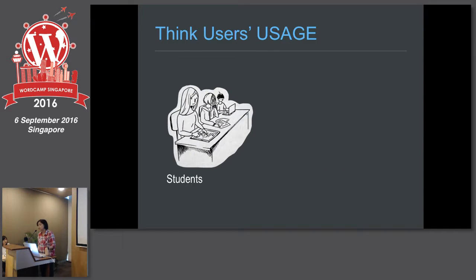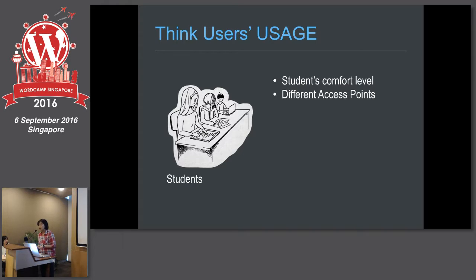We also have to think about student usage. What is the student's comfort level? Different students vary — some are more tech-savvy, some are not comfortable. There are also different access points: some students use laptops, some use mobile phones, some use tablets. How are they accessing the blogs? Different devices, different access points — on-site or off-site — because the course blog is restricted when off the school campus network.